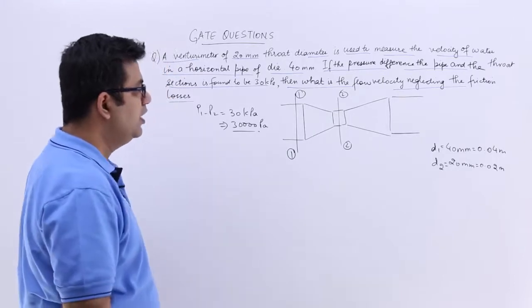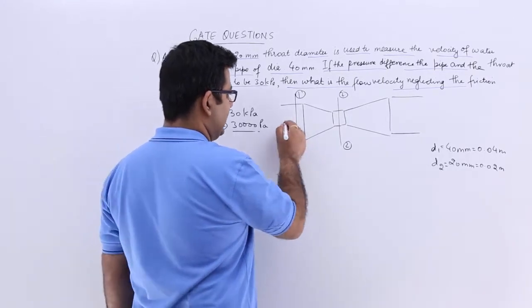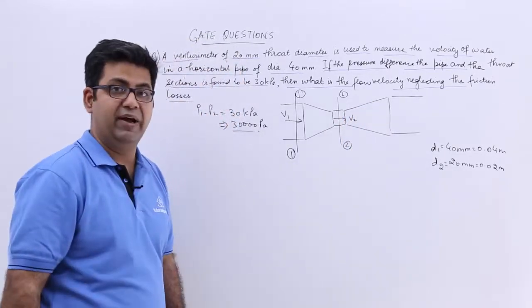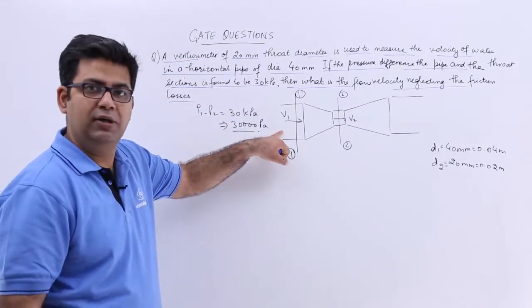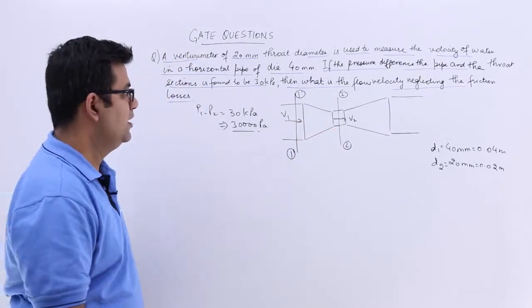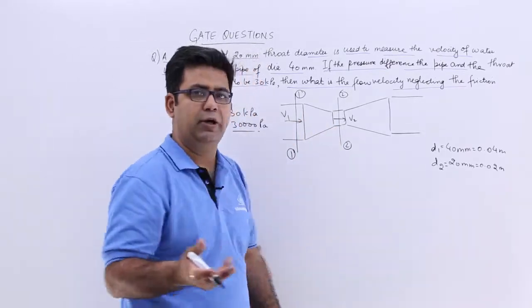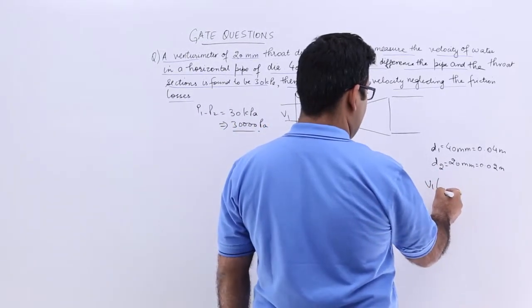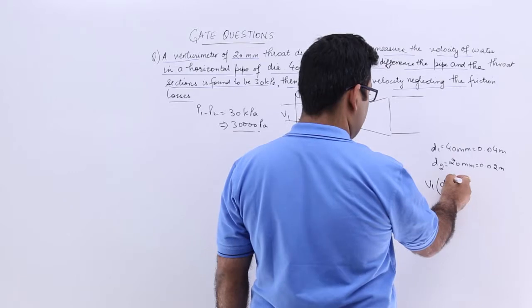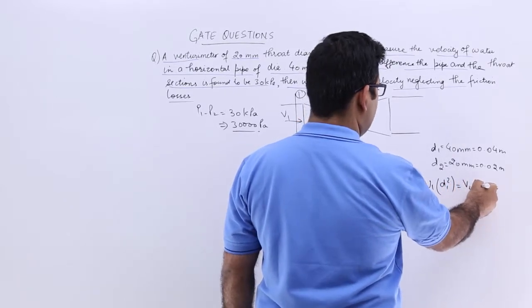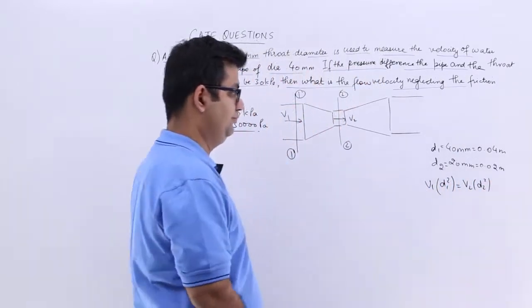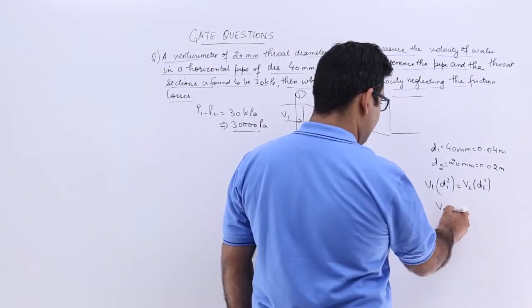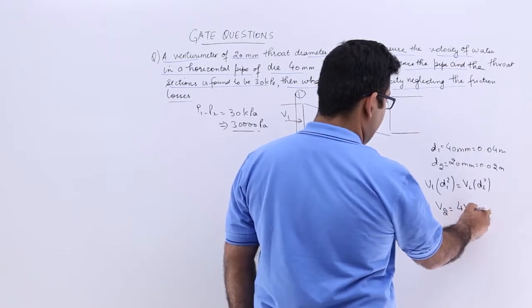Now let us say that at section 1 the velocity is V1 and at section 2 the velocity is V2. We have to find the flow velocity, not the velocity at the throat. So for that I will apply the continuity equation. If you apply the continuity equation you will get V1 times D1 squared equals V2 times D2 squared. So V2's value in terms of V1 would be 4 times V1.